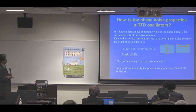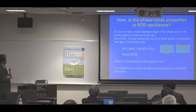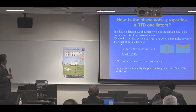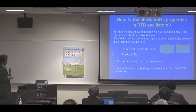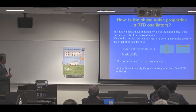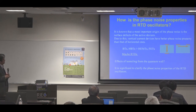It is known that the most important origin of phase noise is surface defects in active devices, and vertical-type devices have better phase noise properties than horizontal devices. Bipolar transistors and HBTs are better than HEMTs and FETs. We expect that RTDs may also have better phase noise properties, but there are not many reports about the phase noise of RTD oscillators. This must be clarified for future applications.